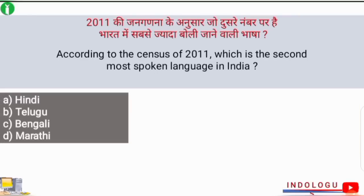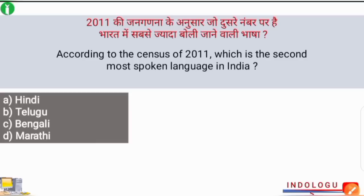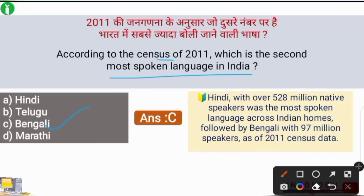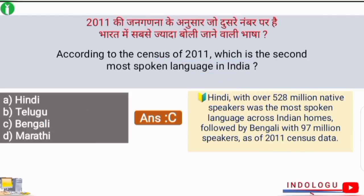Next question: according to the census of 2011, which is the second most spoken language in India? The correct answer is option C — Bengali. After Hindi, Bengali is the second most spoken language in India. Hindi had over 528 million native speakers, followed by Bengali with 97 million speakers as of the 2011 census.